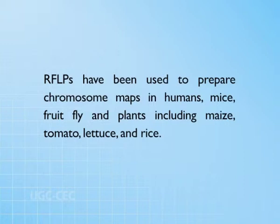RFLPs have been used to prepare chromosome maps in humans, mice, fruit fly, and plants including maize, tomato, lettuce, and rice. RFLPs are used to study the inheritance and linkage relationship and genetic linkage maps in plants and animals. RFLP markers are also used to map genes in diseased persons and for identification of disease. DNA polymorphisms are differences in DNA sequences that result from point mutations, random deletions, or insertions, or the presence of a variable number of repeated copies of a DNA fragment, also known as tandem repeats.